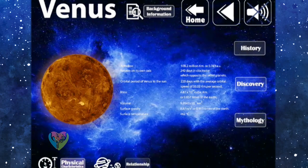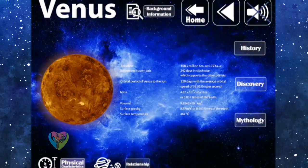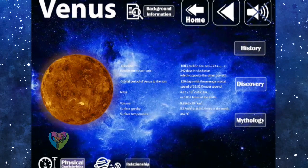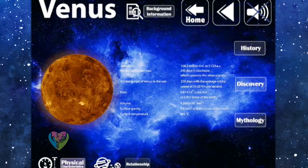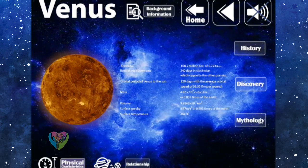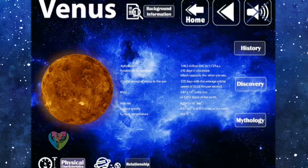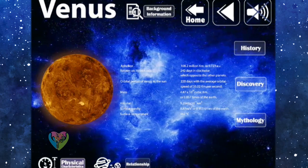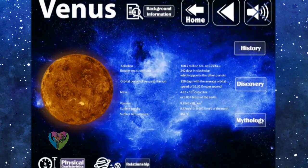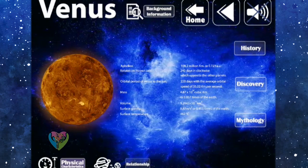The mass is 4.87 times 10 to the 24 cubic kilometers, or 0.857 times of the Earth. The diameter is 12,103 kilometers. The surface gravity is 8.87 meters per square second, or 0.903 times of the Earth. And the mean surface temperature is 462 degrees Celsius.